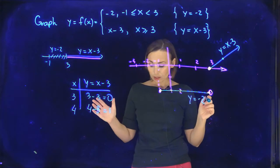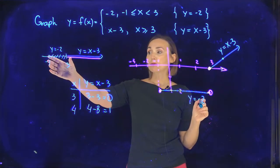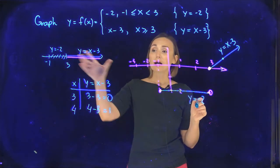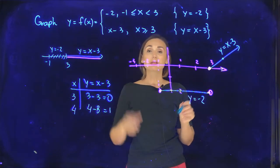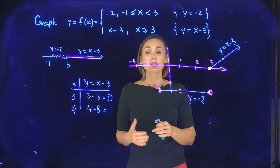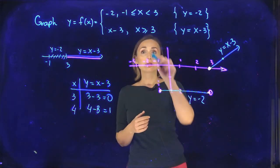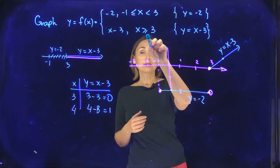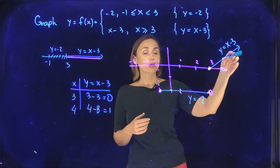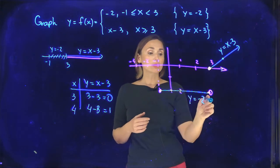Once again: from negative 1 to 3 you graph the horizontal line y equals negative 2, and after that you graph the line y equals x minus 3. After graphing both line segments, figure out what point is included and what point is excluded. The non-strict inequality means x equals 3 is included in the line segment y equals x minus 3. At negative 1, the point is included; at 3, the point is excluded from the first segment.